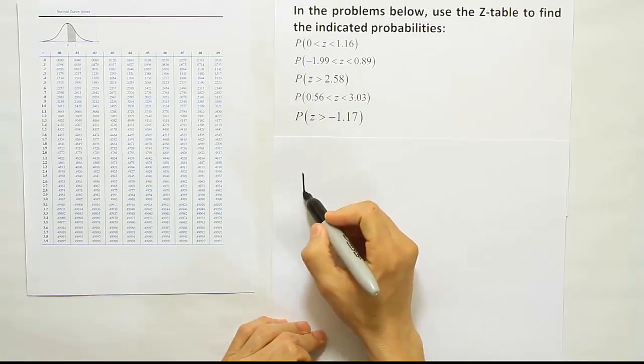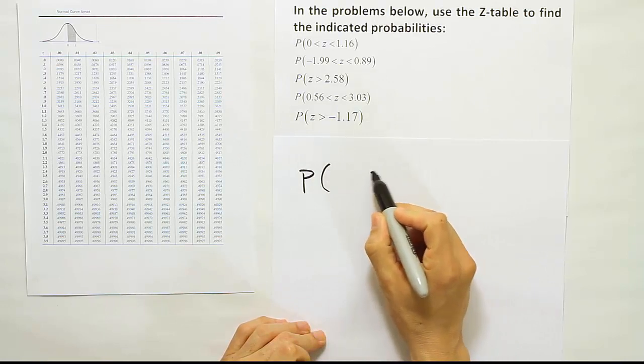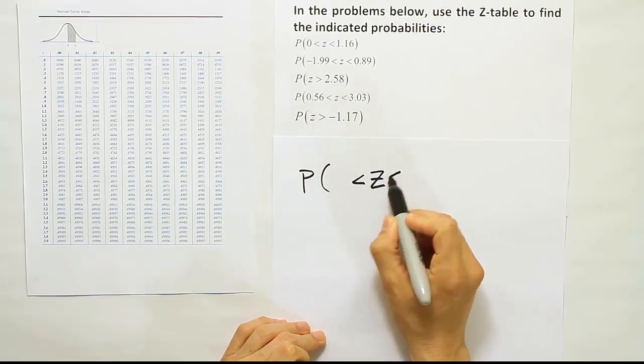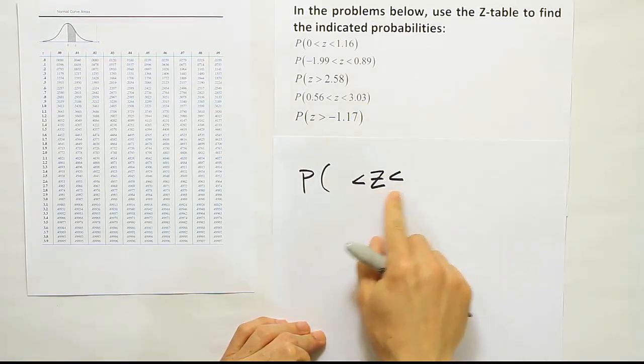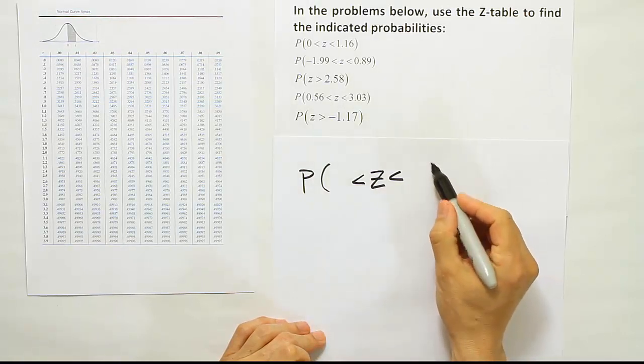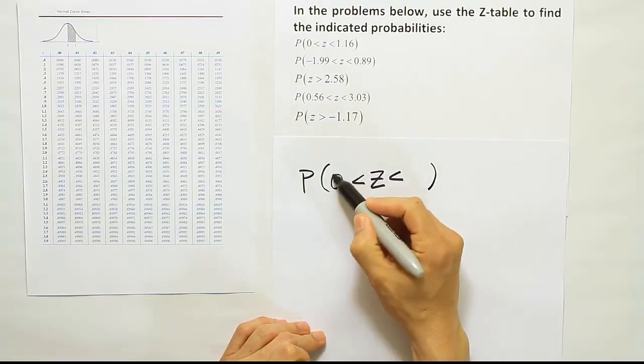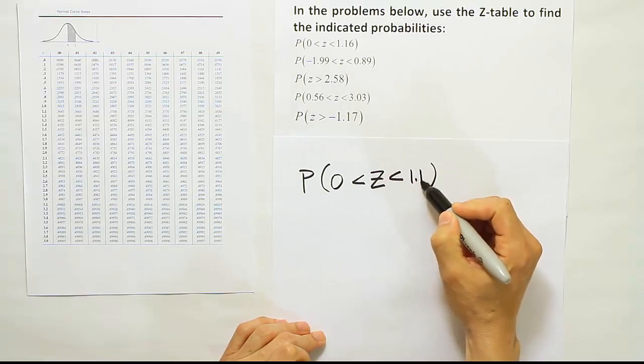It's the probability that z is between. And the way they write between is to put a z surrounded by two less than symbols. So the probability that z is between 0 and 1.16.